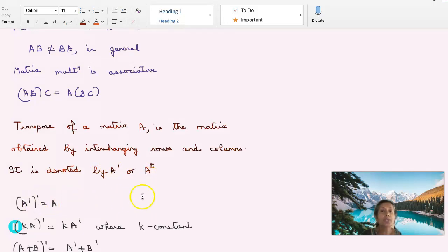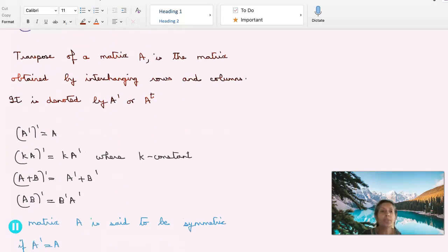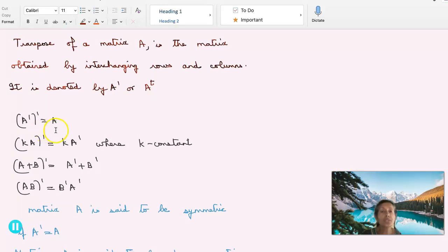Some basic properties of transpose you need to know, namely A transpose transpose is A. What is transpose of Ka where K is a scalar? It is K times A transpose. Again, A plus B transpose will be A transpose plus B transpose. And what is AB transpose? That is B transpose into A transpose.